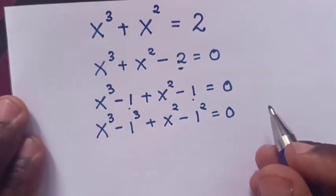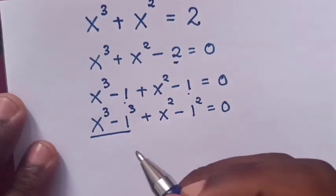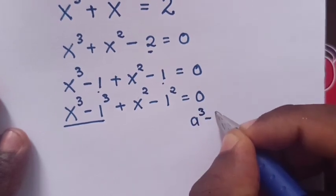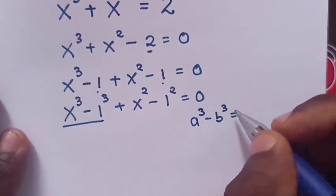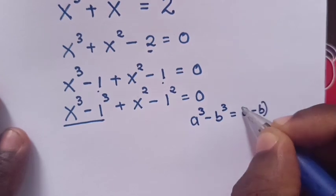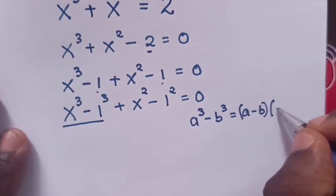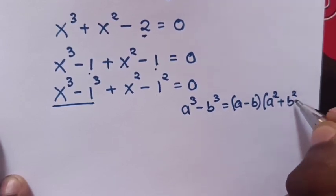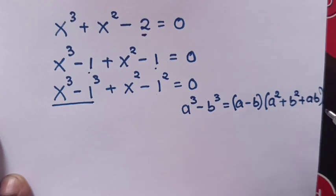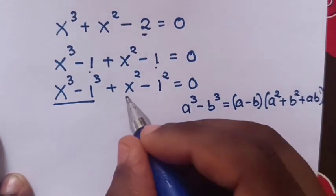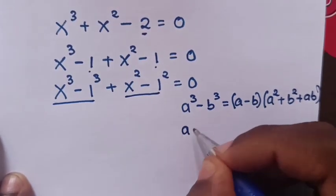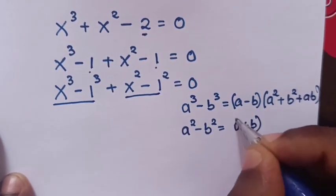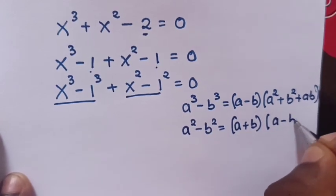So from here, we'll apply the rule that a power 3 minus b power 3 is equals to a minus b, times a squared plus b squared plus ab. And in this part, we will apply the rule that a squared minus b squared is equals to a plus b times a minus b.